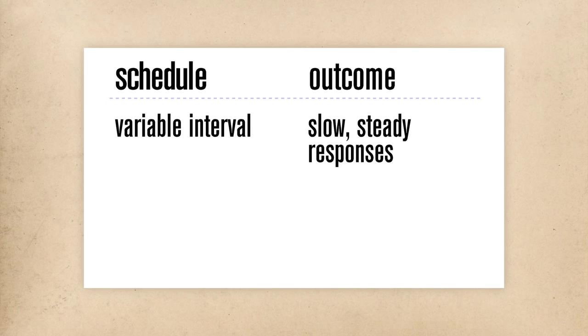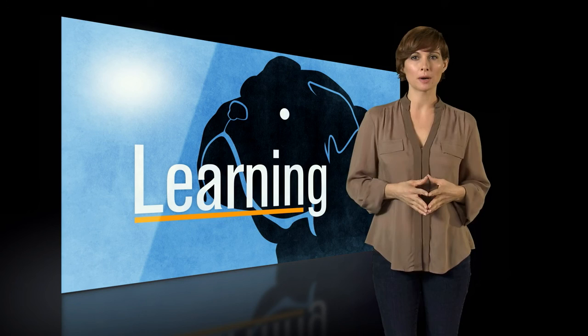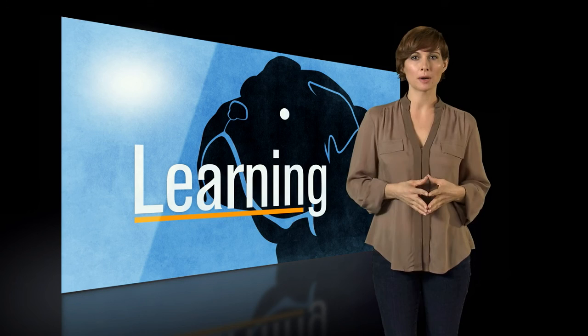Lastly, a variable interval schedule produces a slow, steady rate of response, without the pauses seen in fixed interval schedules. Shorter intervals produce higher response rates. This schedule offers the slowest rate of extinction. For many behavior modification programs where people are trying to change unwanted behavior, variable ratio schedules are often used because they produce steady responding and reasonable resistance to extinction. Interval schedules are rarely used because they tend to be more difficult to administer.